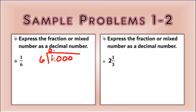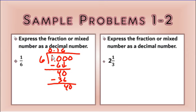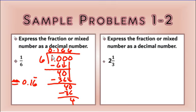6 can't go into 1, but 6 can go into 10 — 1 time. 1 times 6 is 6. Subtract and get 4. Bring down the 0. 6 goes into 40 — 6 times — that's 36. Subtract and get 4. Bring down the 0. 6 goes into 40 again — 6 times — 36. So you can see that the 6 is repeating. My answer would be 0.16 with the 6 repeating.